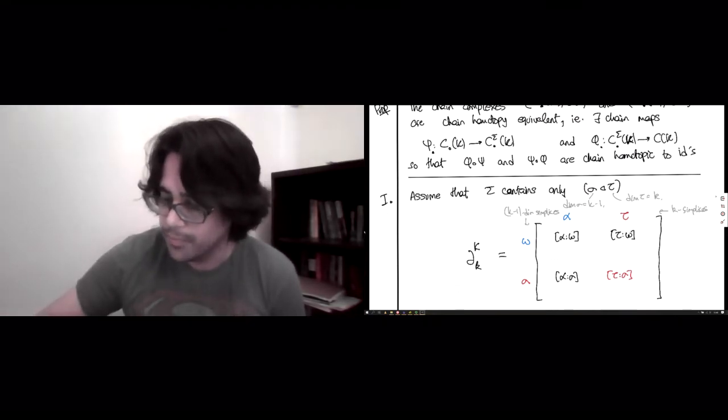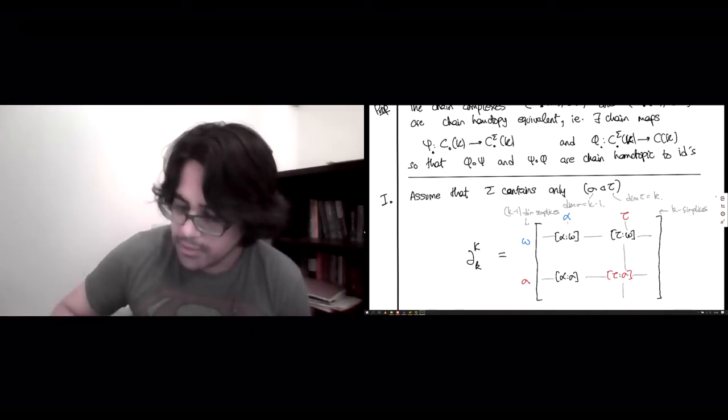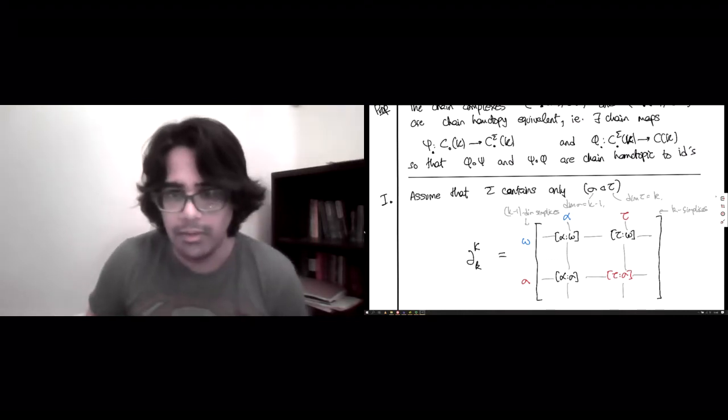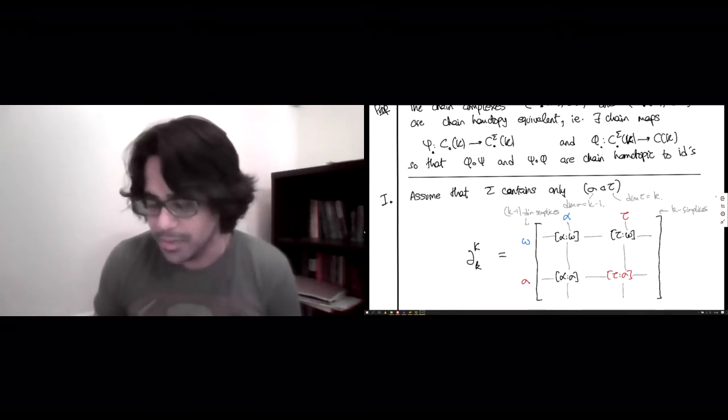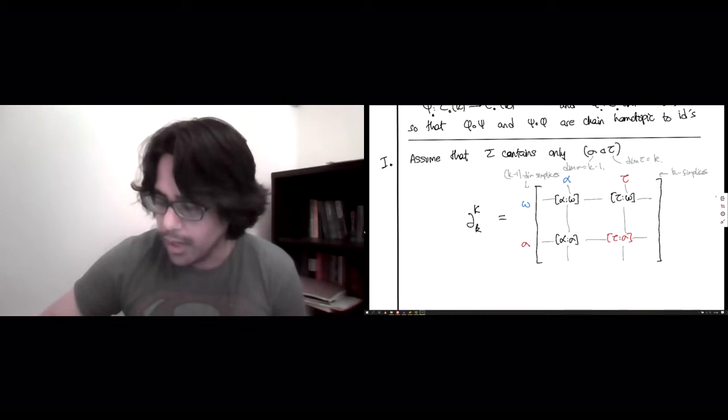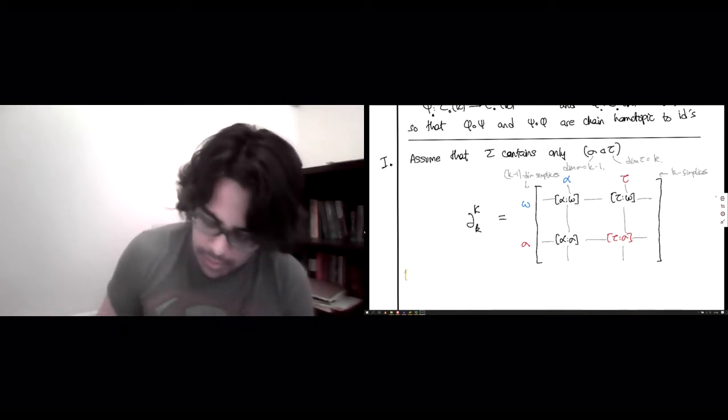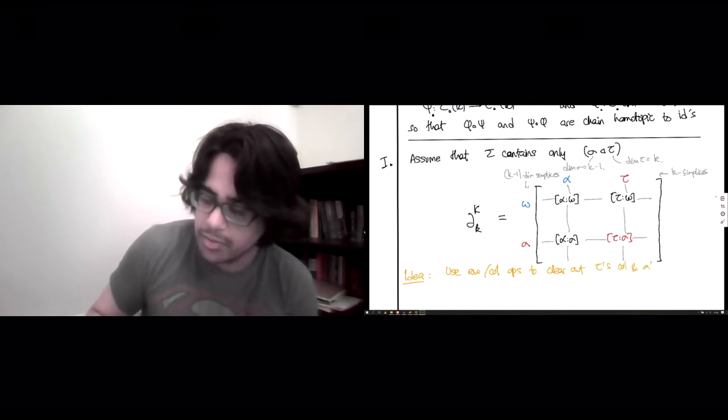And so, if you look at this matrix, it has tons of entries. I mean, I've only written out four, but there could be thousands and thousands of k simplices and millions of k-1 simplices. But these four are all we focus on right now. And the idea is to use row and column operations to clear out tau's column and sigma's row.